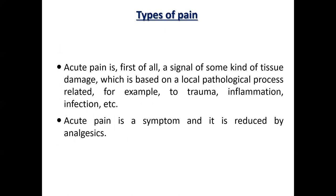Acute pain is a signal of some kind of tissue damage — an acute local pathological process related to trauma, inflammation, infection, and so on. Acute pain is a symptom, and it is always reduced by analgesics. So the easiest way to treat acute pain is to use analgesics.